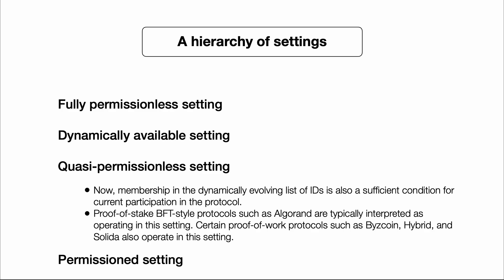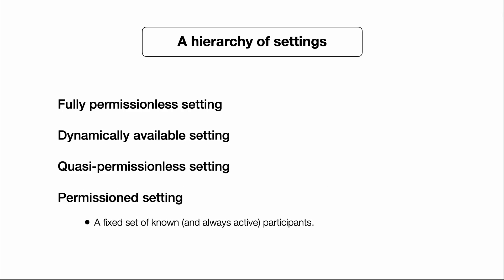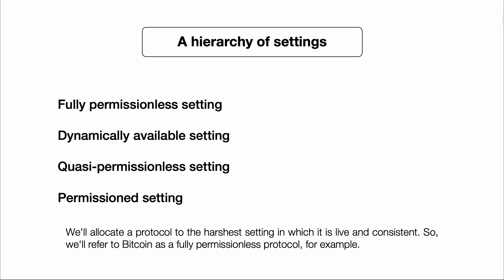Finally, the easiest setting to operate in is the permissioned setting — the standard classical setting in which we have a fixed set of known and always-active participants.